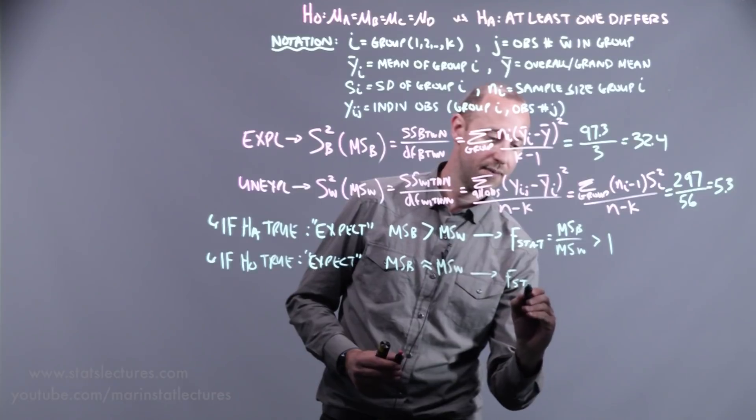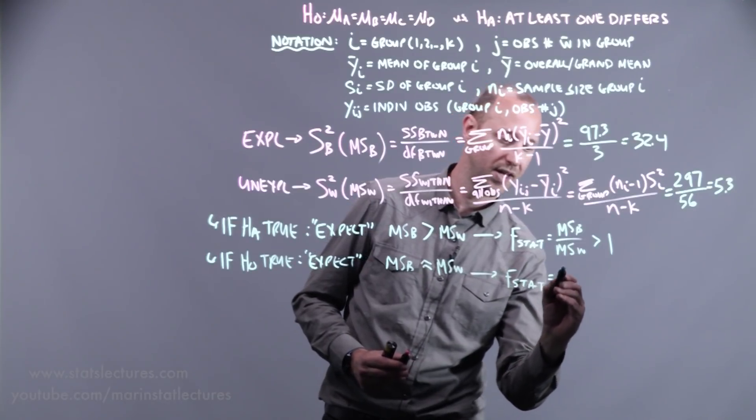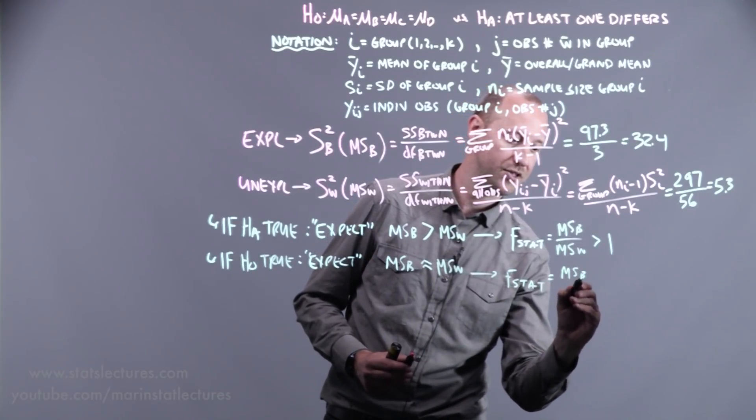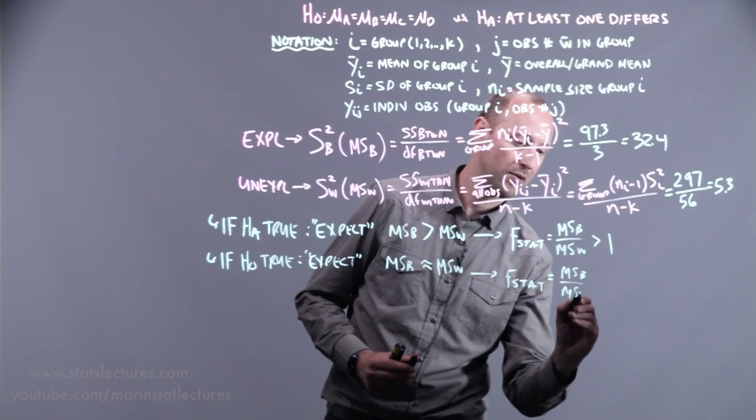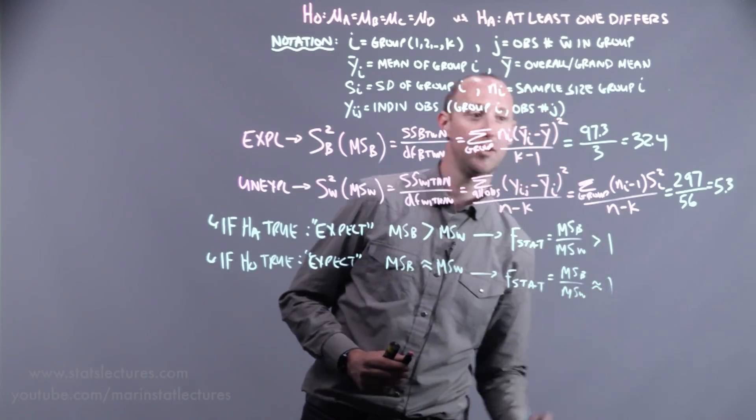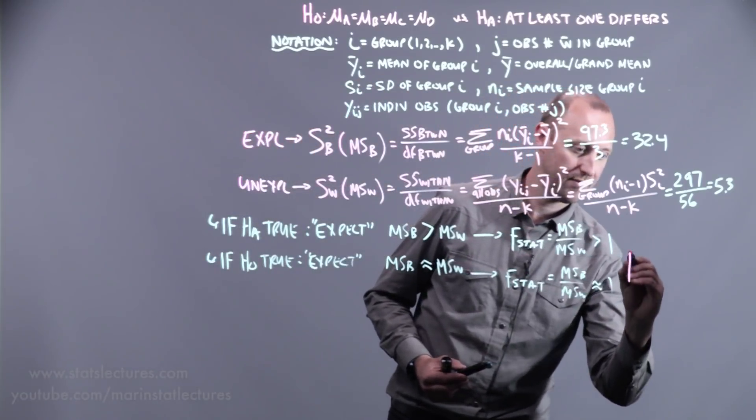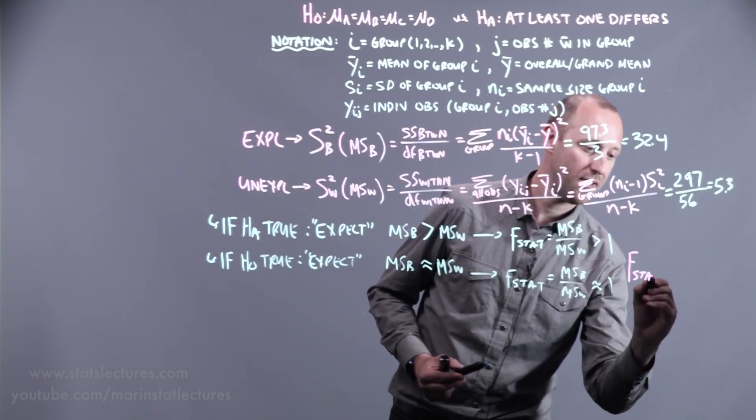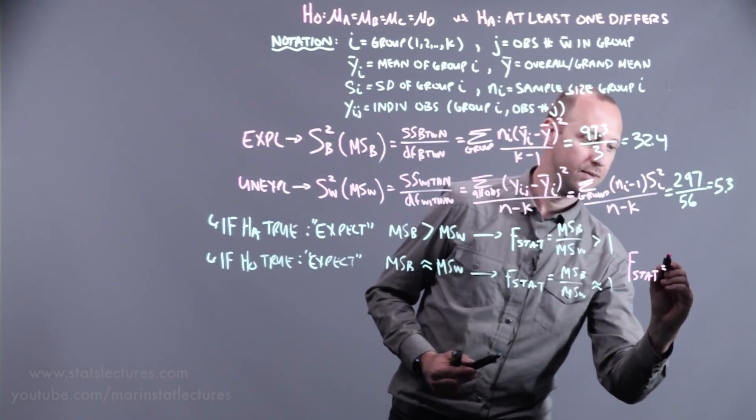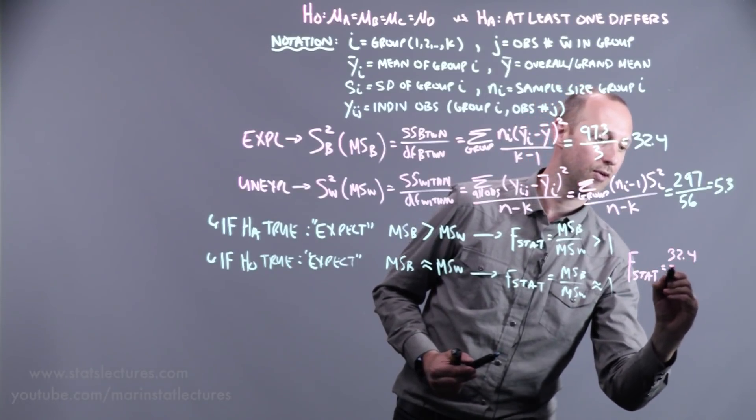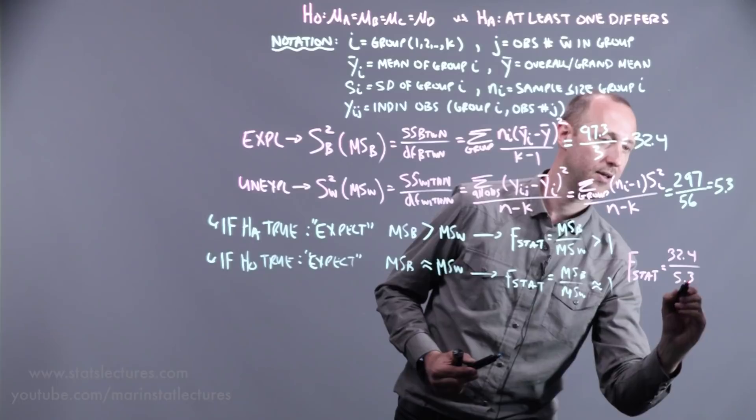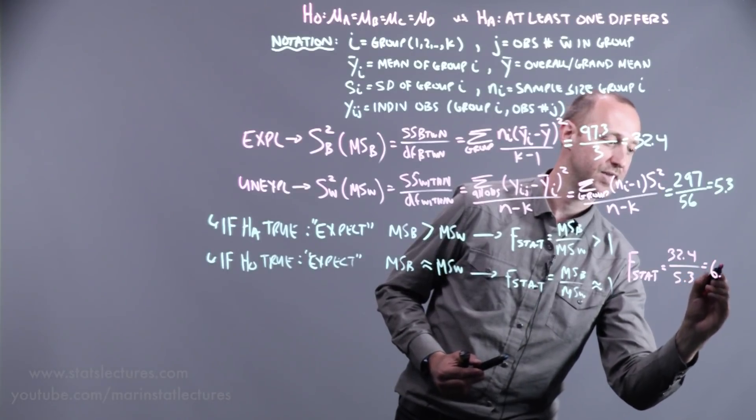When looking at an F statistic, we're taking the ratio of these two, we'd expect that to come out to be roughly one. If we do this for our set of data, our F statistic, 32.4 over the 5.3, that's going to come out to be 6.1.